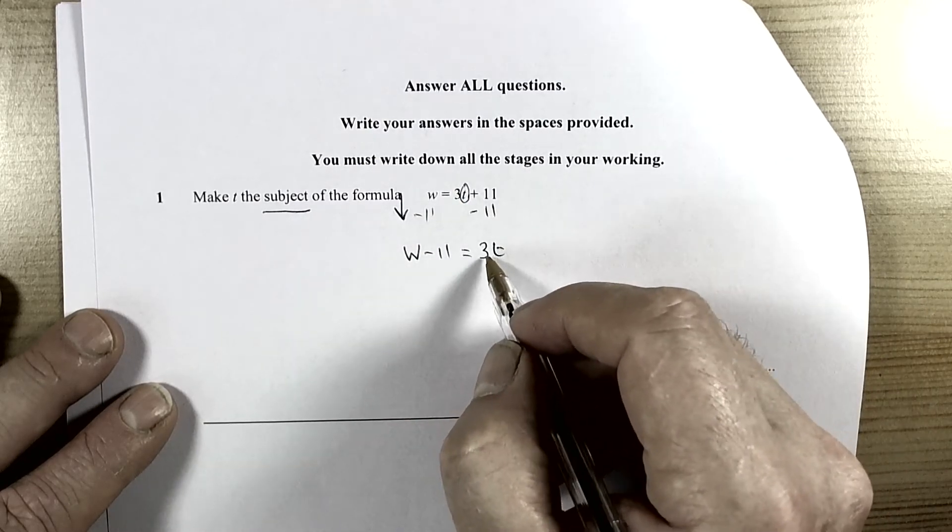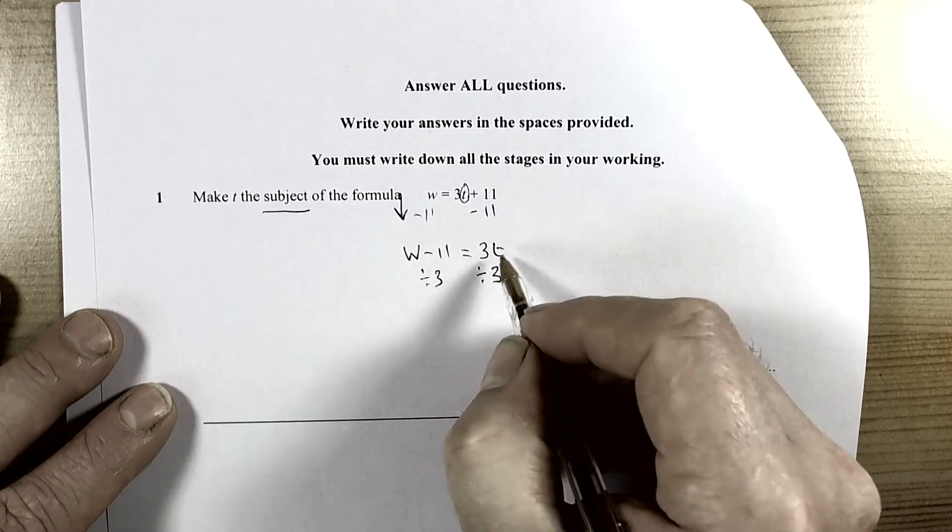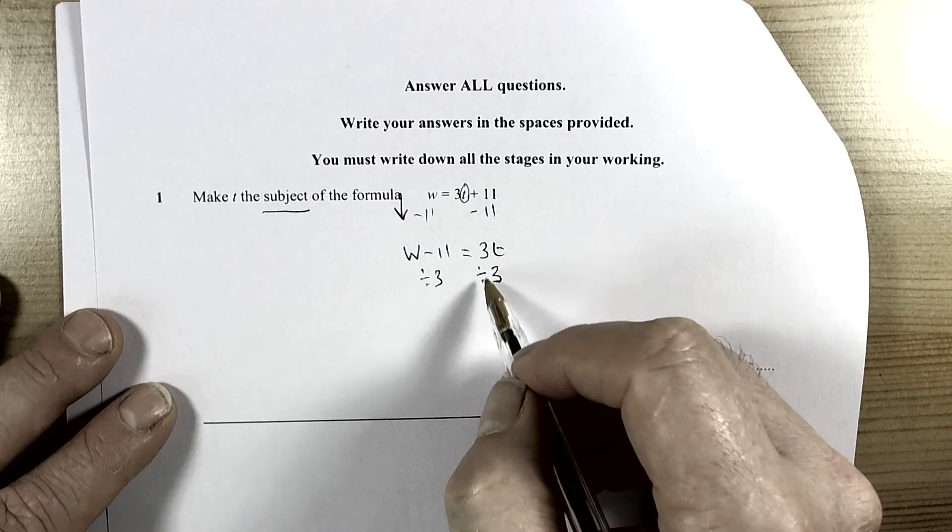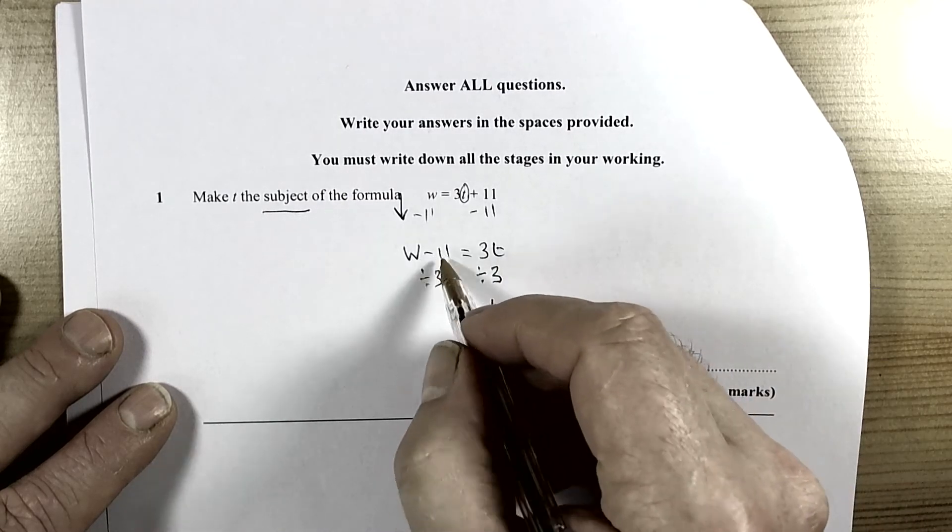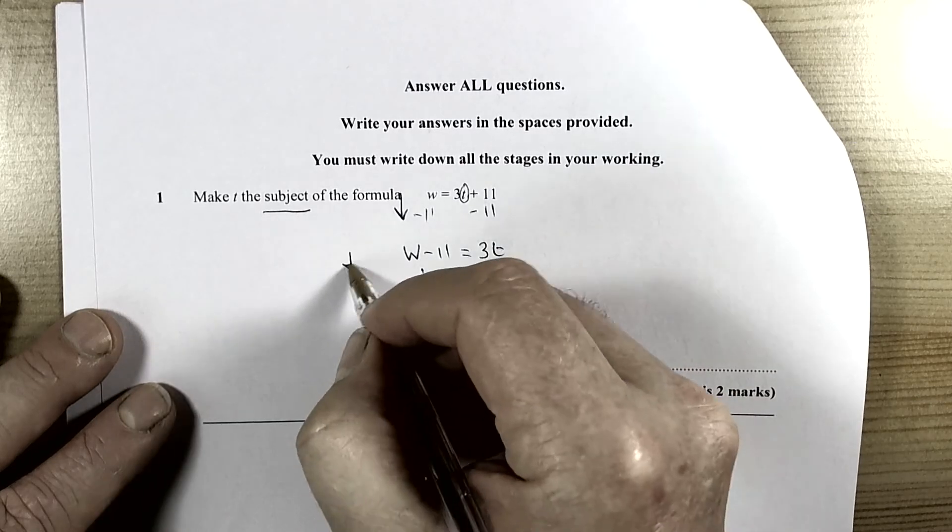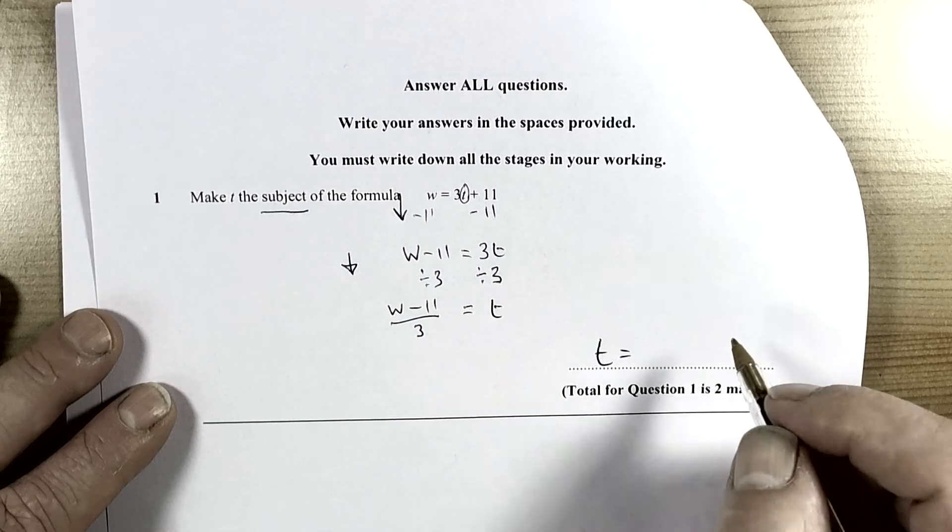We want to know what 1t is, so we are going to have to divide by 3 because that is 3 times t. The opposite of times is dividing, so 3 divided by 3 is 1, so we have 1t. And we have w take away 11, because remember we come top down, so that was w take away 11 first, and then we are dividing all of that by 3.